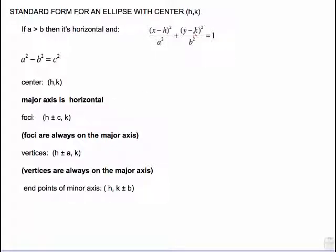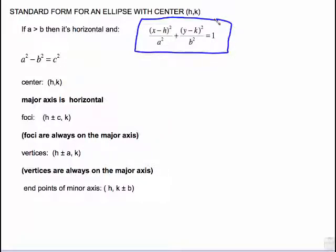We're now going to have this formula: x minus h squared plus y minus k squared. That should look familiar because that's the same thing we had with the circle. I teach this different from the book — that's the only form we're going to worry about where a always goes under the x and b always goes underneath the y. So a refers to horizontal distance, b refers to vertical distance.